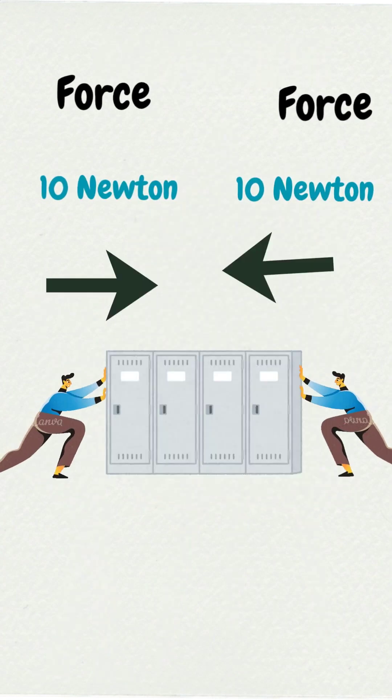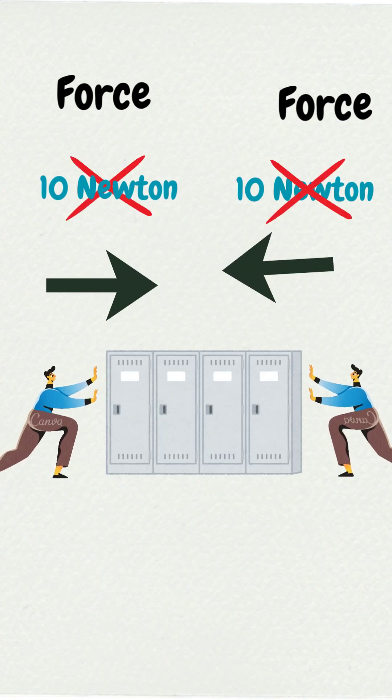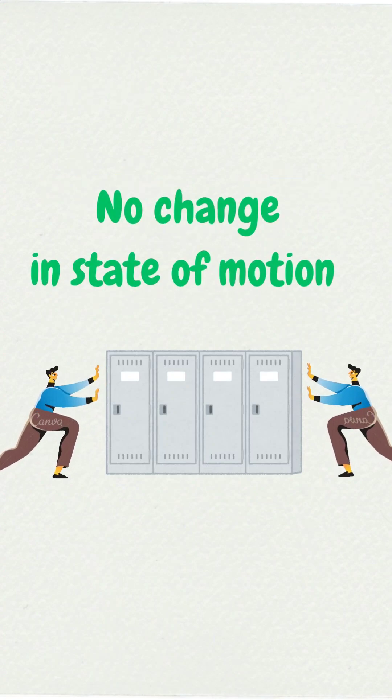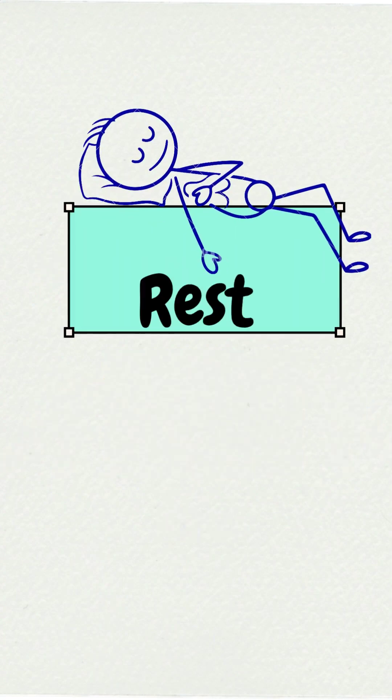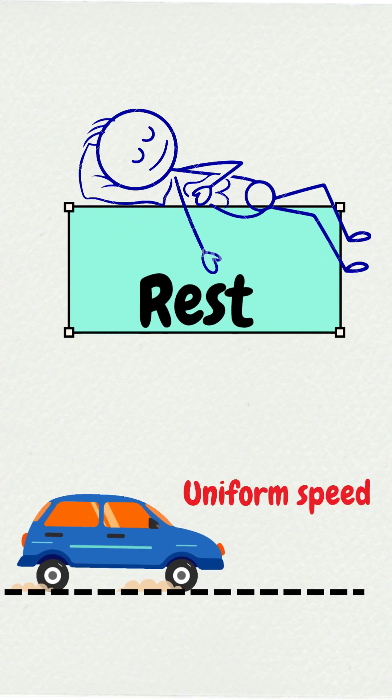When balanced forces act on an object, they cancel each other. As a result, there is no change in the state of motion. The object may remain at rest or continue to move with constant speed in a straight line.